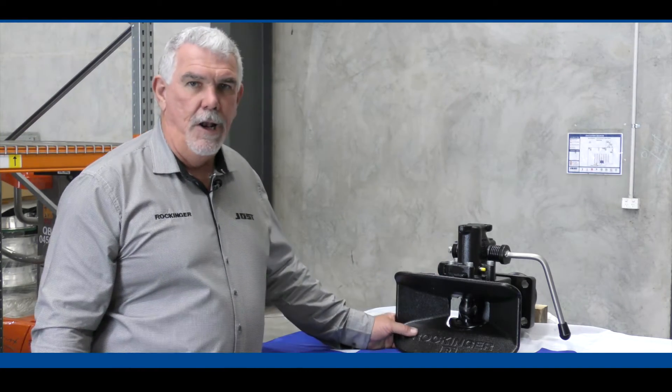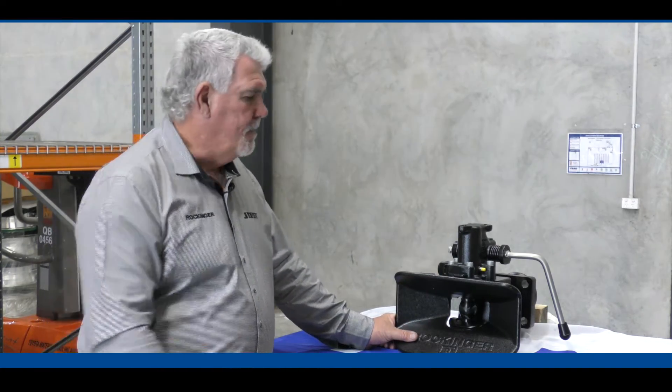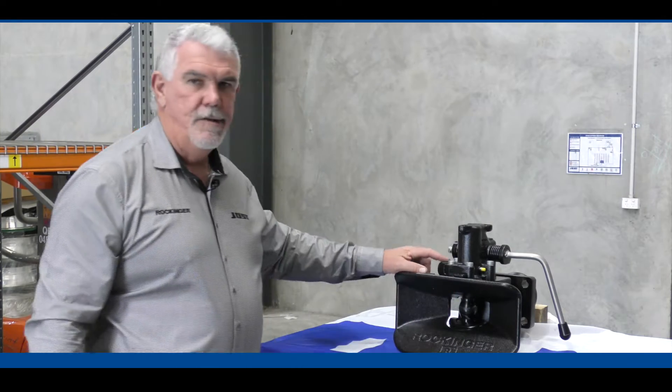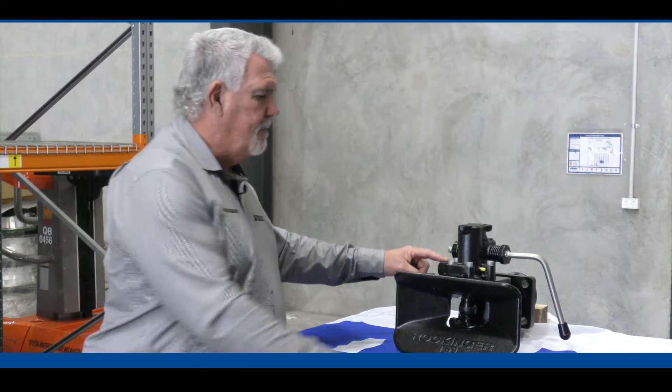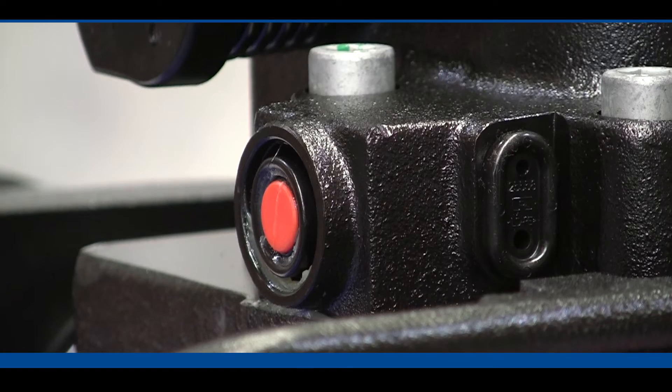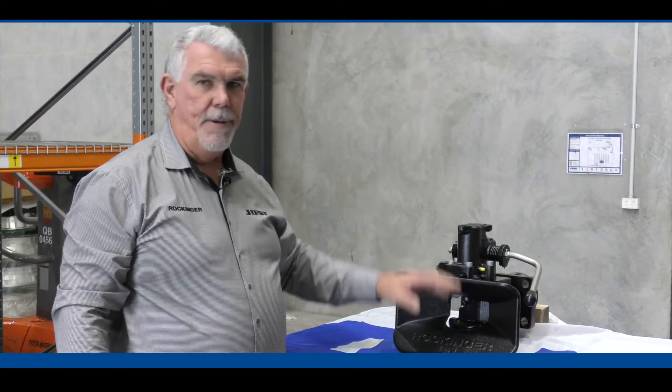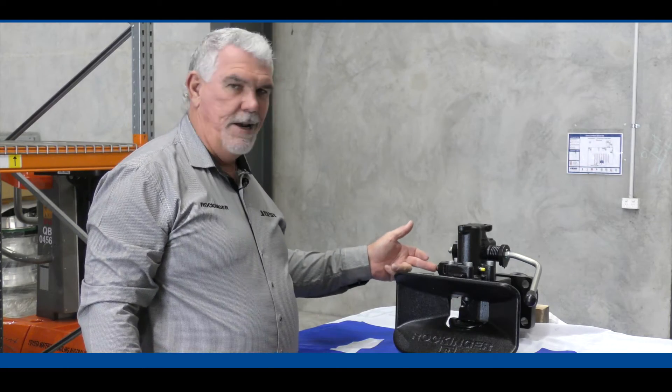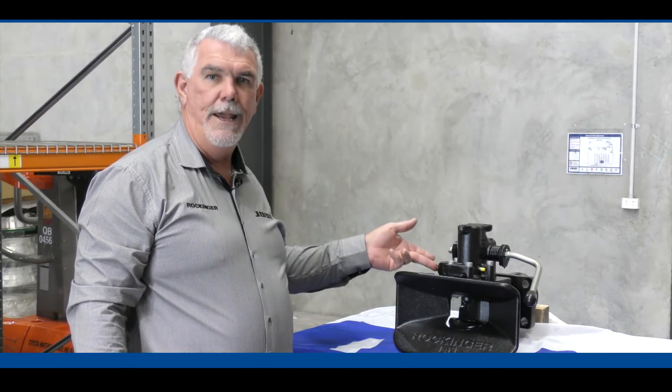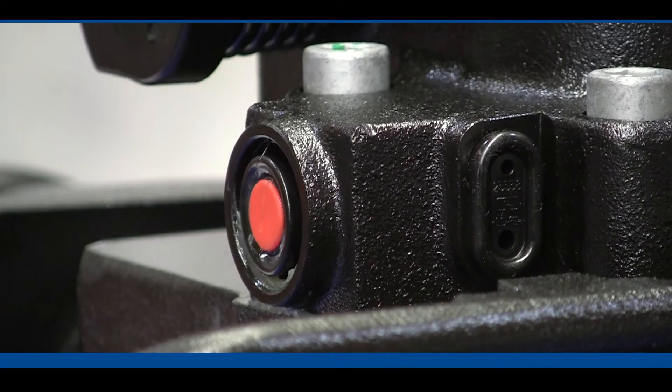It's also a single-handed operation coupling, so it has an automatic secondary safety lock. As I pull the handle, the safety automatically pops out. Then when the coupling closes, you're checking to make sure that that safety has gone all the way in and is not visible outside of the housing of the coupling.